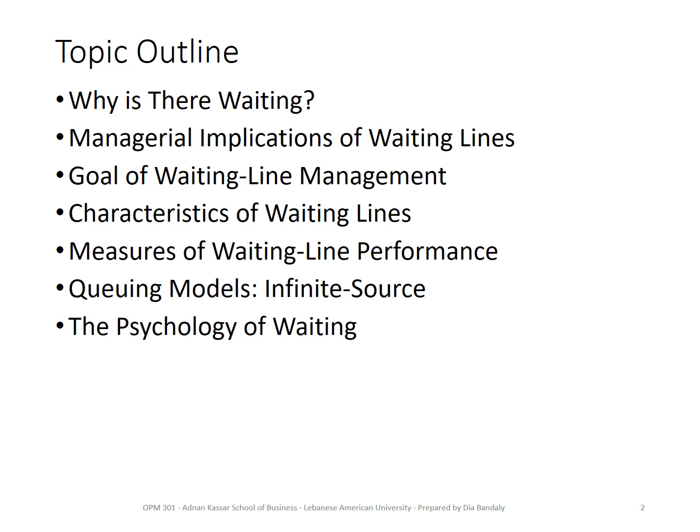These are what we call waiting line performance measures. Then we will learn two models. There are different waiting line models, but considering the introductory nature of this course, we will cover only two simple models. We're going to learn what are the specifics for these models and what makes one model different from the other. We're going to use these models to do performance measures, and in addition to that, we're going to do a cost analysis. The ultimate objective is that you will be able to do a capacity design for a certain company using a very simple procedure — all based on a waiting line perspective.